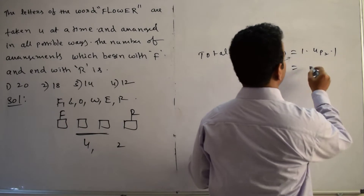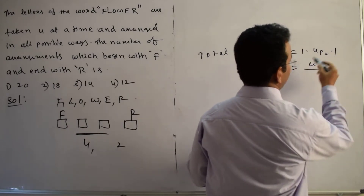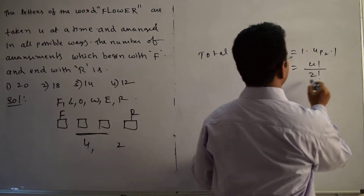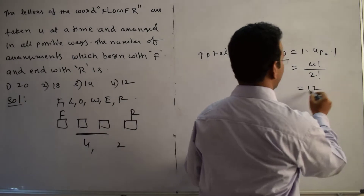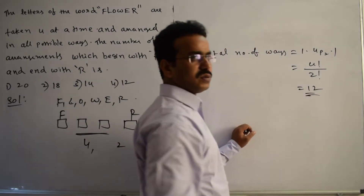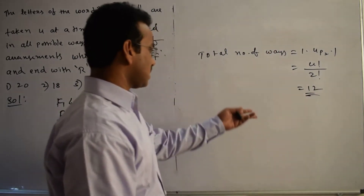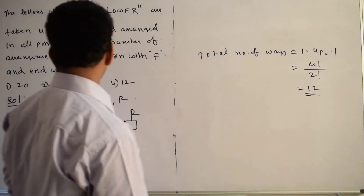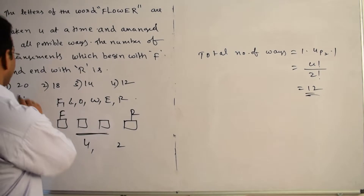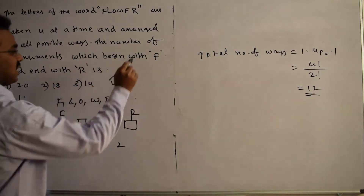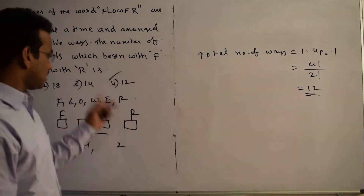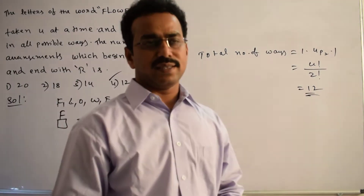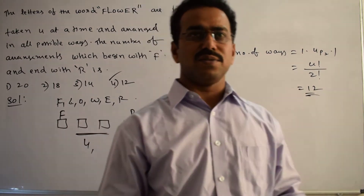4P2 equals 4 factorial divided by (4 minus 2) factorial, which simplifies to 12. Comparing with the given options — 20, 18, 14, 12 — the answer is 12, which is the correct option. The rest of the options are incorrect. This is the final conclusion.